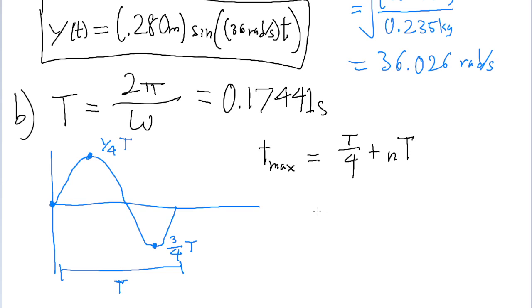So let's take the period that we found earlier, 0.17441, and divide it by 4, and that gets us about 4.36 times 10 to the power of negative 2 seconds,